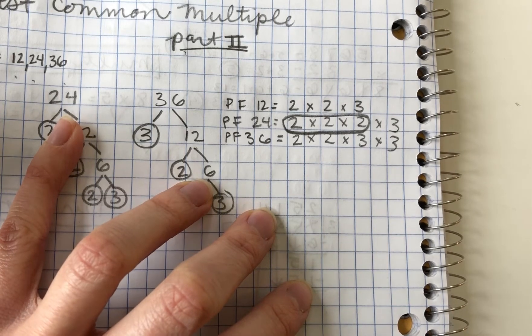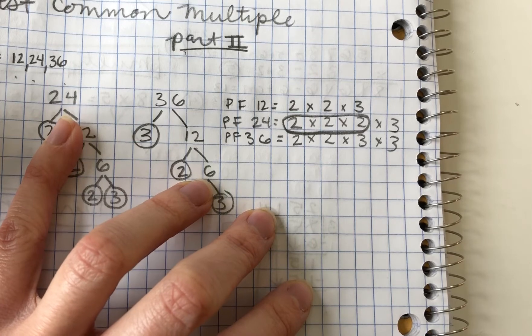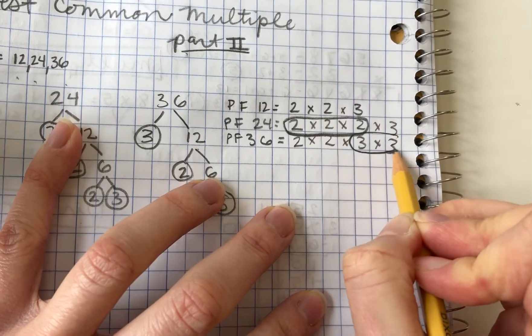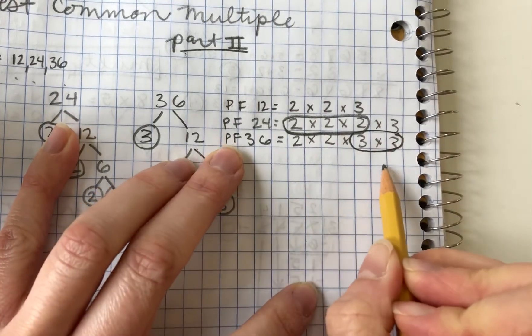The other factor we have here is 3. And what is the most number of times that 3 appears in any of these numbers? Twice. And that appears twice in 36.